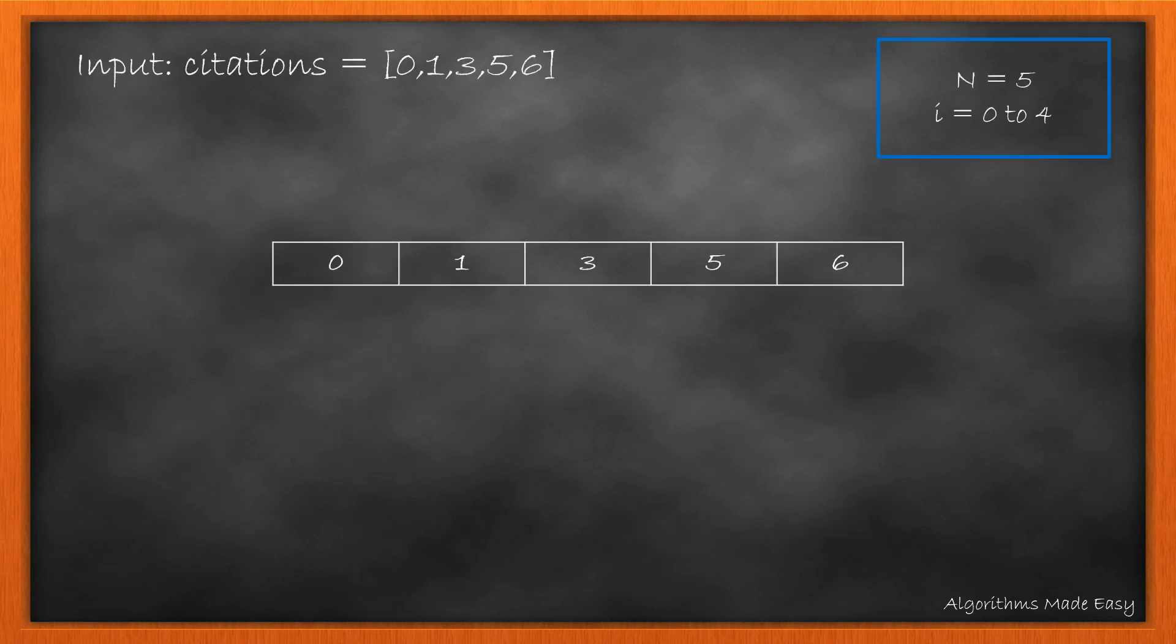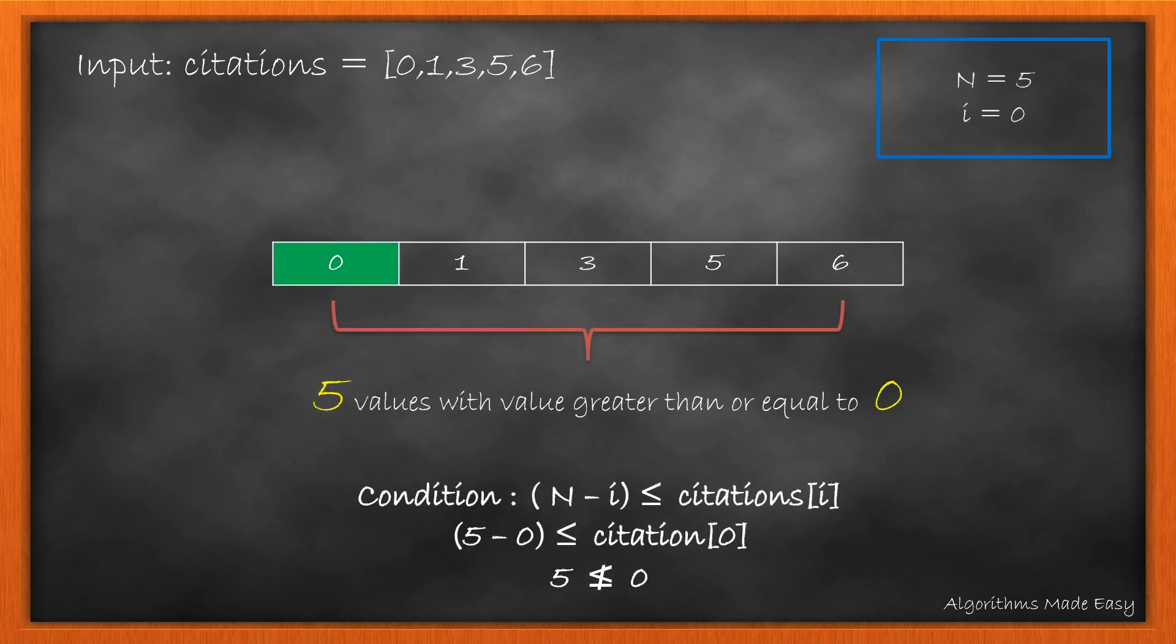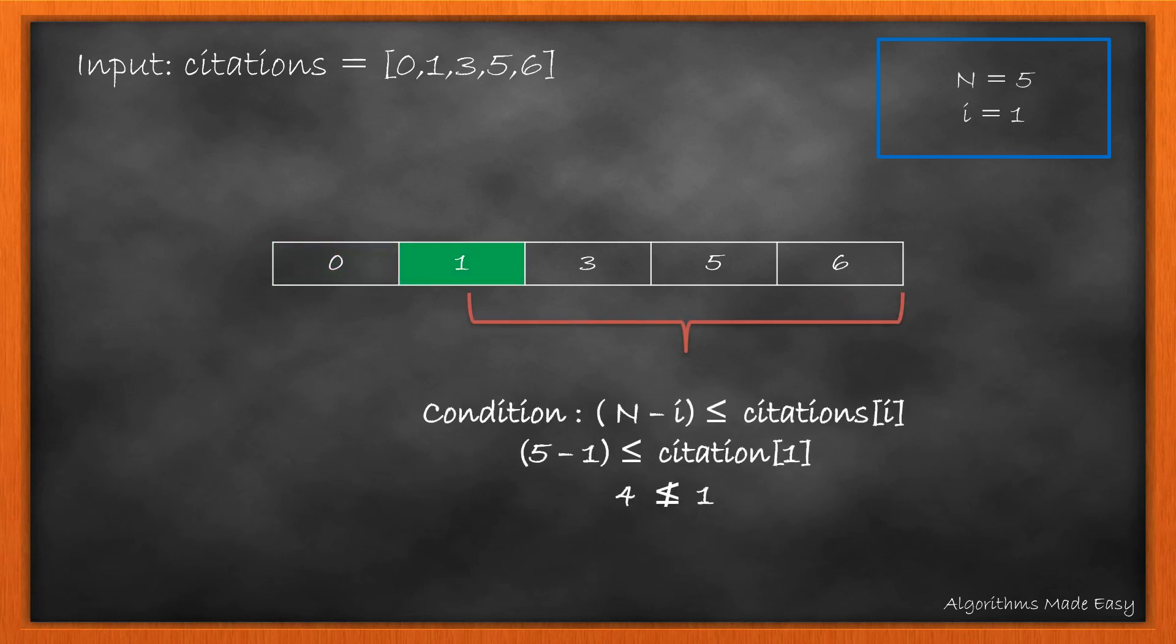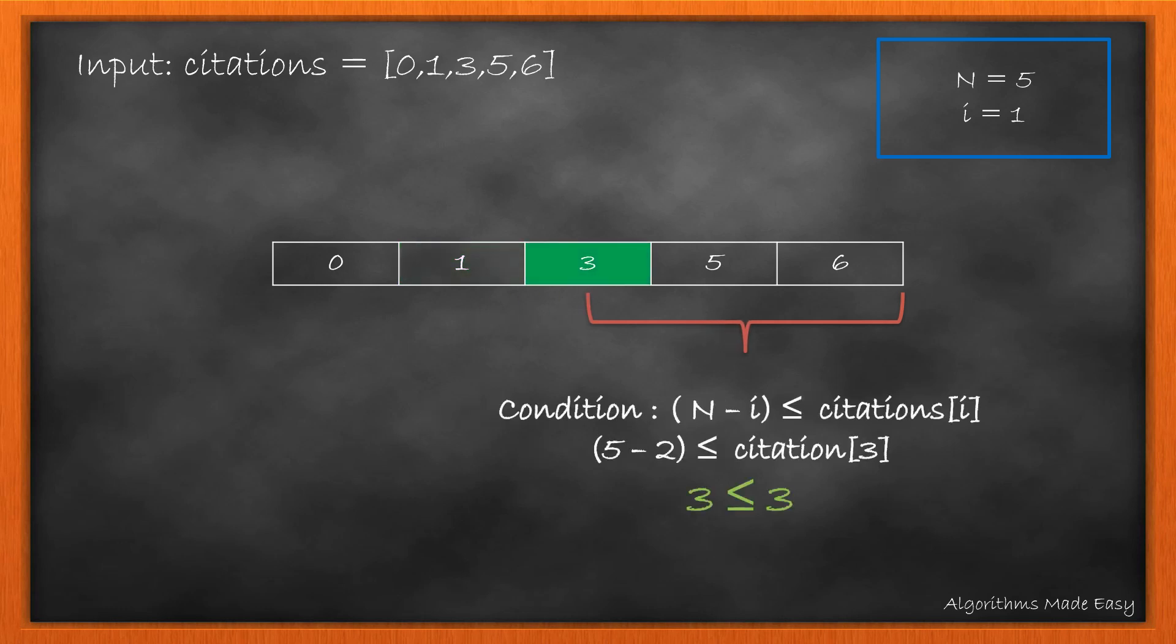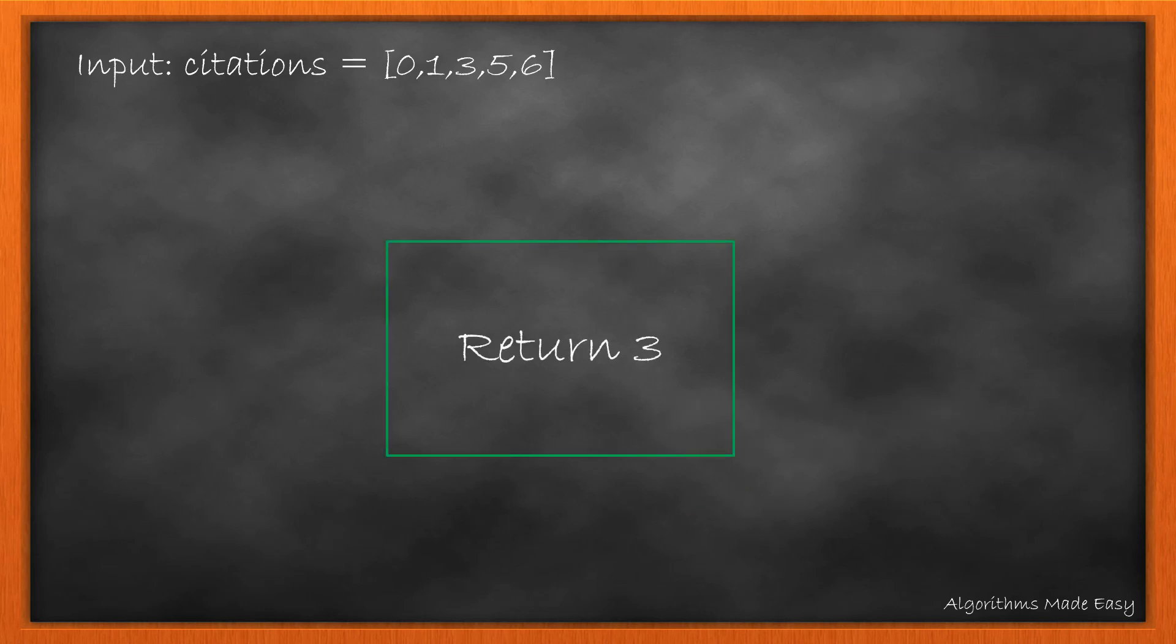Working with the same example, at the start, N is 5 and I will go through 0 to 4. Starting with index 0, we see 5 values with the value greater than or equal to 0 which fails our condition as 5 is not less than or equal to 0. So we move forward. Again our condition fails, so we move forward. This time the condition is satisfied as we have 3 values with a value greater than or equal to 3. So we return 3.